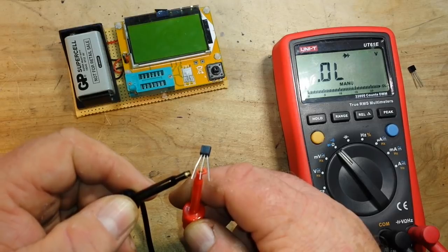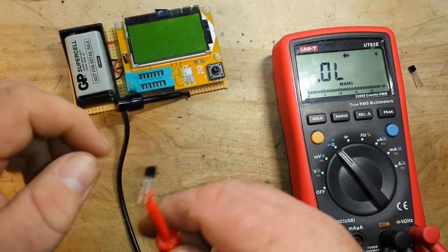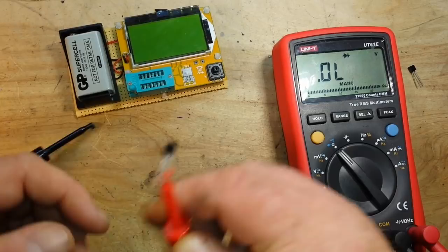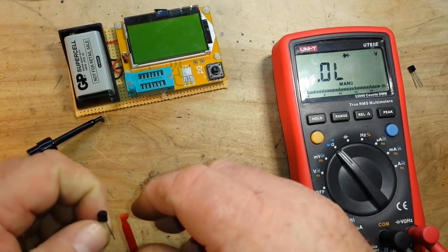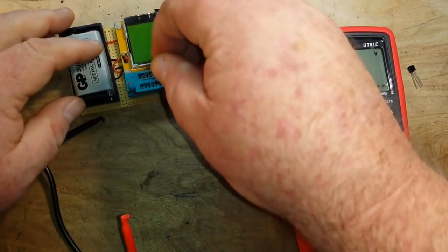So, again, we will be emitter base collector. And since we are positive on our base, this will be an NPN transistor.